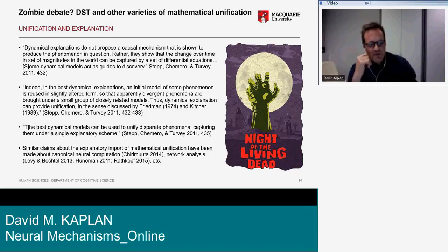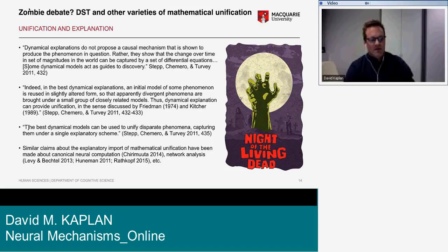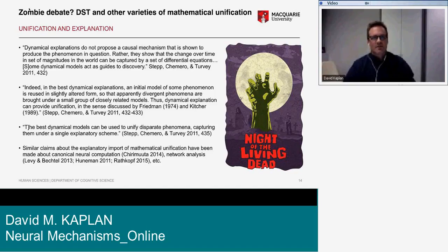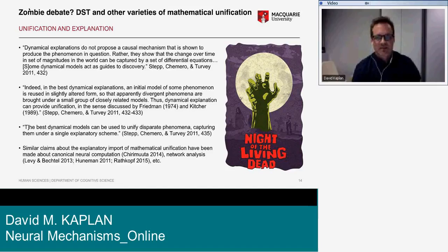Stepp, Chemero, and Turvey note that dynamical explanations do not propose a causal mechanism shown to produce the phenomenon; rather, they show that change over time in a set of magnitudes can be captured by differential equations, and some dynamical models act as guides to discovery. The best dynamical explanations reuse an initial model in slightly altered form so that apparently divergent phenomena are brought under a small group of closely related models — providing unification in the sense discussed by Friedman and Kitcher.